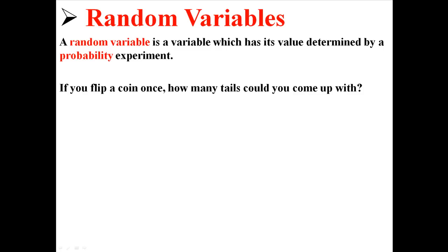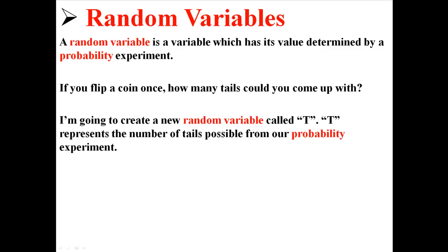So for example, if you flip a coin once, how many tails could you come up with? I'm going to create a new random variable called T. T represents the number of tails possible from this probability experiment.